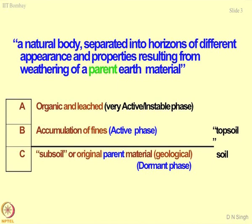The second component of the soil would be accumulation of fines. Accumulation of fines takes place because of the migration of fines when the soil mass interacts with water. Any percolation in the form of precipitation or rains causes rainwater to wash away the fines, and all these fines get accumulated in that zone of the soil mass, making it again a very active phase. Put together, these two phases — the topmost layer and the fines accumulation zone — we call it topsoil.